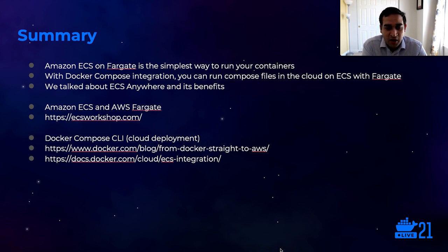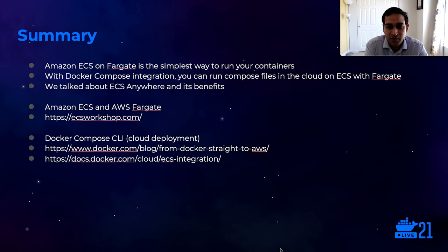Let's summarize. I've shown you how Amazon ECS on Fargate is the simplest way to run your containers and why it makes a lot of sense for you to pick that up. With Docker Compose integration, you can now run Compose files in the cloud on Fargate and ECS through the simple app integration that we built, and we plan to invest in that this year as well. We talked about ECS Anywhere and the benefits it offers, so you can now have one control plane running in the cloud. Later this year, we also plan to improve the Docker integration and add ECS Anywhere integration capabilities. To learn more, you can go to ecsworkshop.com and play with sample applications to learn about ECS and the Fargate services, and also visit the Docker links to learn about the integration done with the Compose CLI.